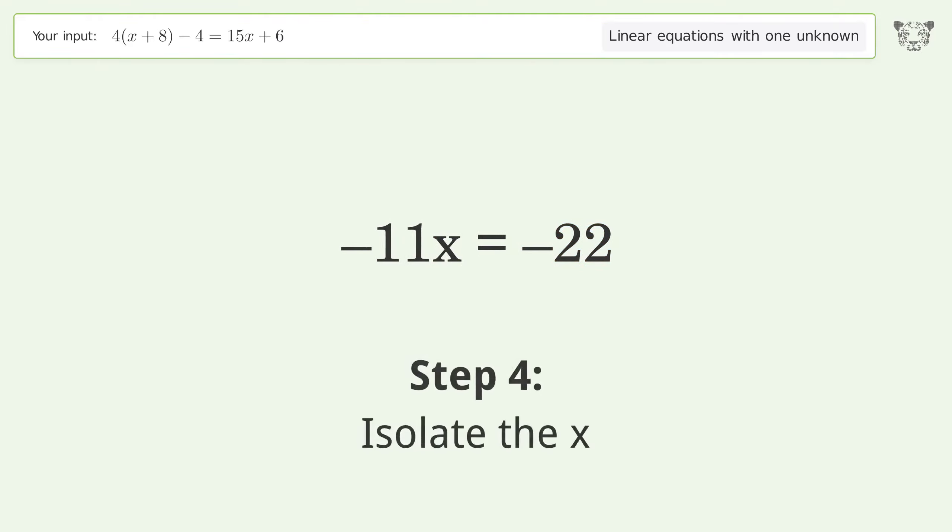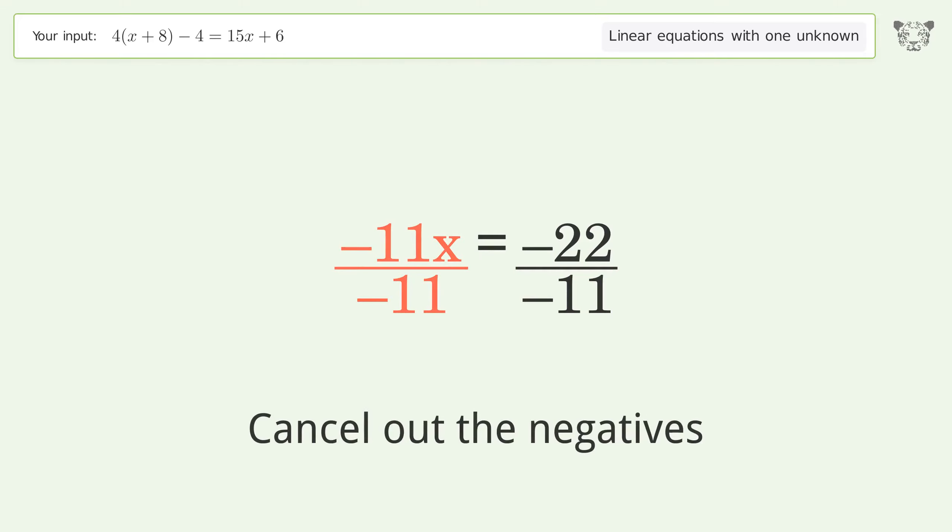Isolate the x. Divide both sides by negative 11, then cancel out the negatives and simplify the fraction.